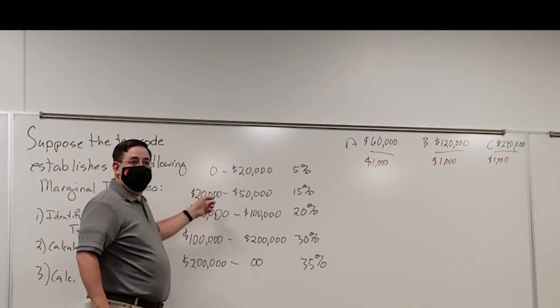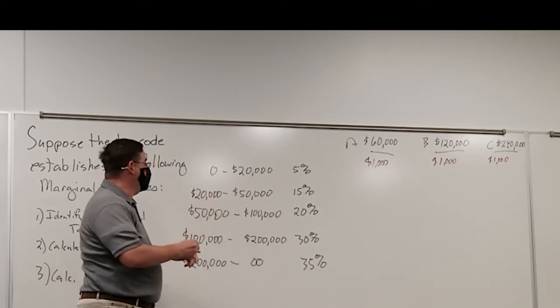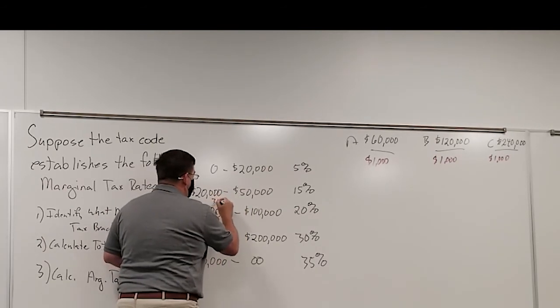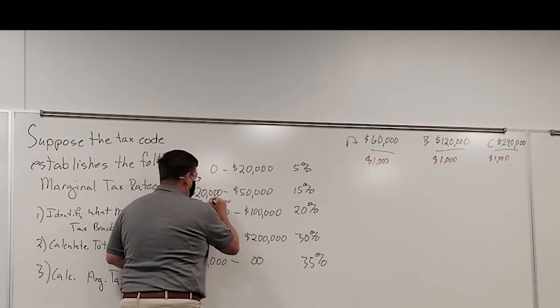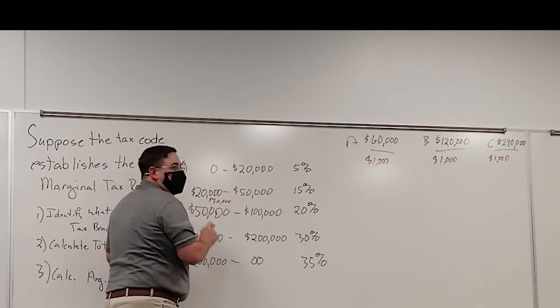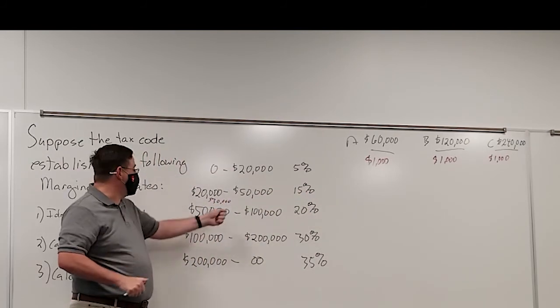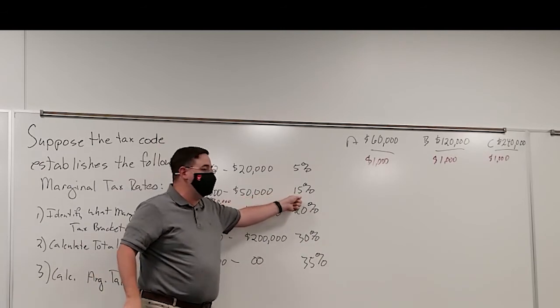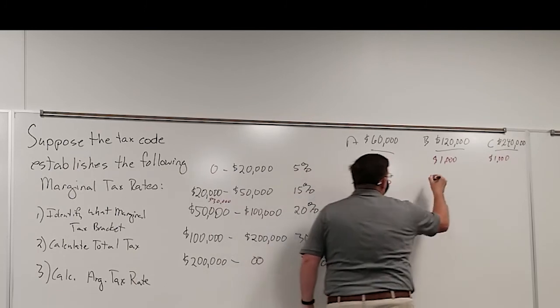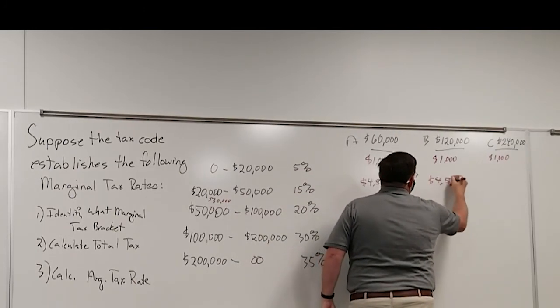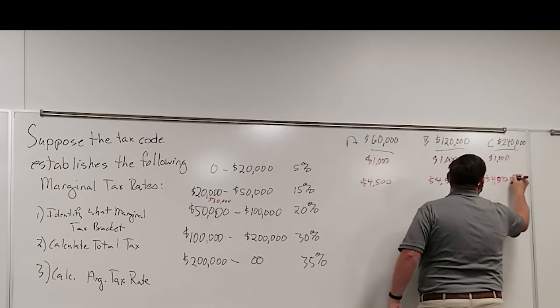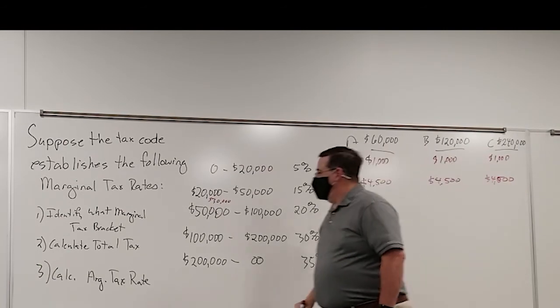The next step in our calculation here would be that for the amount of money that we earn in this tax bracket, which is $30,000, we're going to pay 15% tax on that $30,000. So we would multiply 30,000 times 0.15 and we get $4,500. And all three families are paying that tax as well.